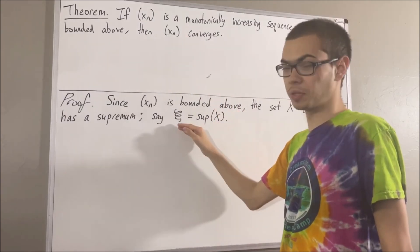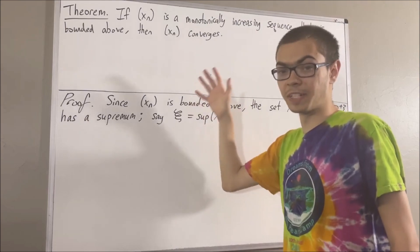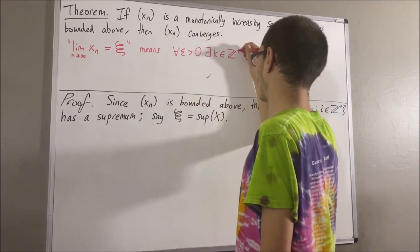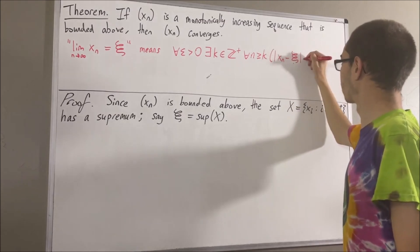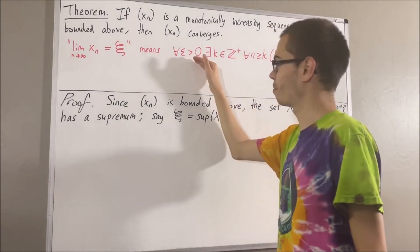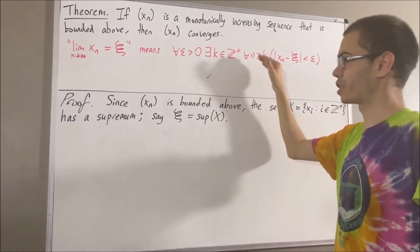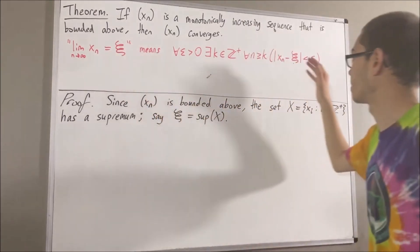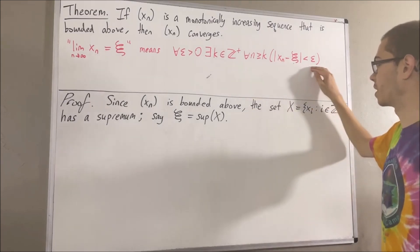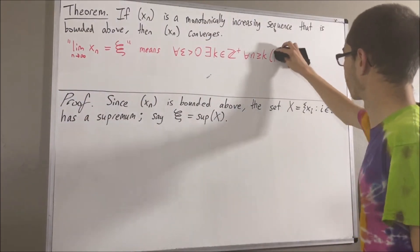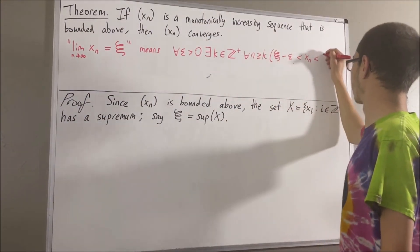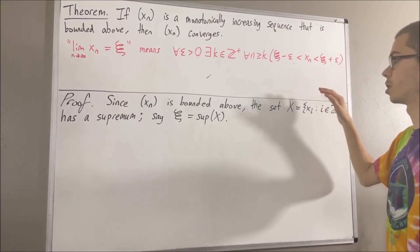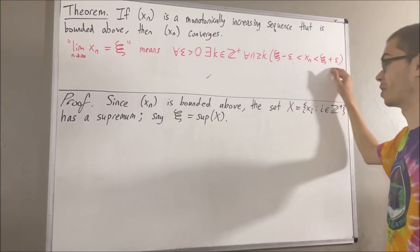What does it mean for our sequence to converge to psi? Well, by definition of the limit of a sequence, it means the following: for every epsilon greater than zero, there exists a positive integer k, such that for all positive integers n greater than or equal to k, the absolute value of Xn minus psi is less than epsilon. An equivalent way of putting this is: psi minus epsilon is less than Xn, which is less than psi plus epsilon. It turns out it's going to be convenient to use this version in our proof.